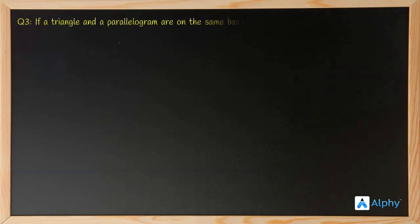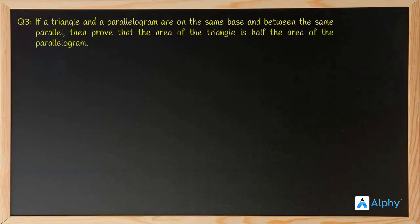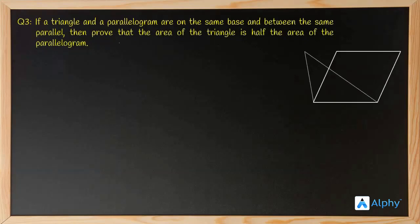Now we have a tricky question — a very interesting one. If a triangle and a parallelogram are on the same base and between the same parallels, then prove that the area of the triangle is half the area of the parallelogram. In this question there is no diagram given, so we have to make our own diagram. We are told there is a triangle and a parallelogram with the same base and between the same parallels — so we have drawn that.